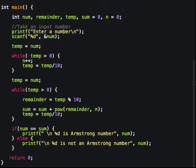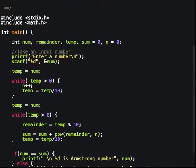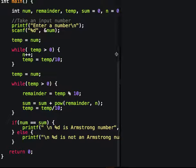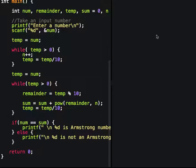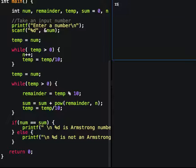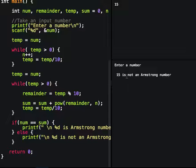We have done the coding part, let's run and execute this program. Let's enter some input value. Suppose I am entering 15, and now let's run. 15 is not an Armstrong number.